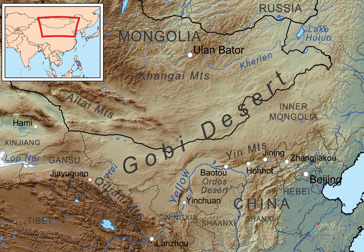They are greatly intersected by gullies or dry watercourses. Water is scarce, with no streams, no lakes, no wells, and precipitation falls seldom. The prevailing winds blow from the west and northwest, and the pall of dust overhangs the country as in the Takla Makan and the desert of Lop.